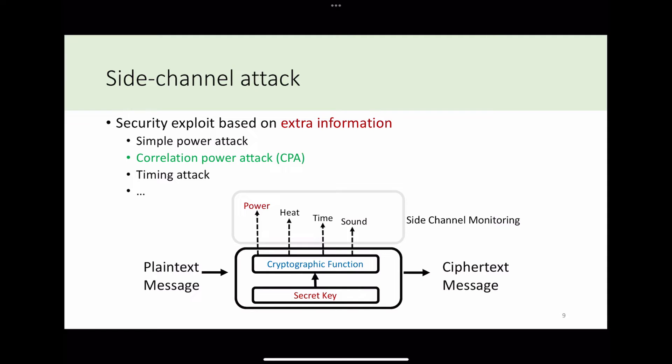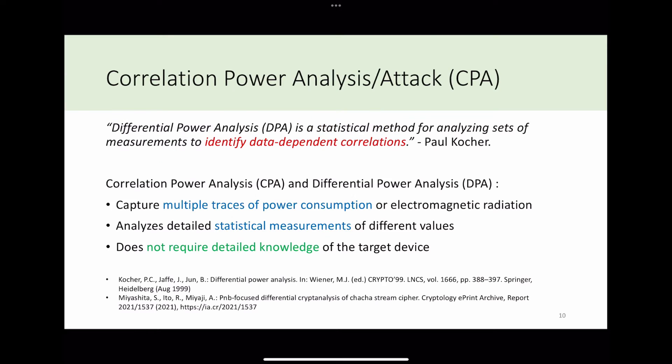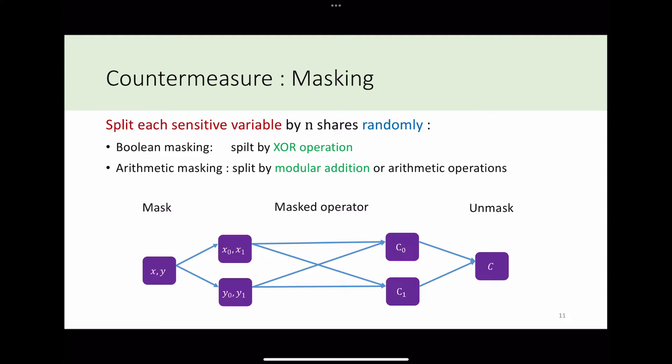A side-channel attack is any attack based on extra information, like power consumption or computing timing. Correlation power attack is one of the most powerful side-channel attacks. Correlation power attack can be viewed as a general differential power attack, which is a statistical method for analyzing sets of measurements to identify data dependency correlation. The most powerful advantage of CPA attack is that we don't require detailed knowledge of the target device.